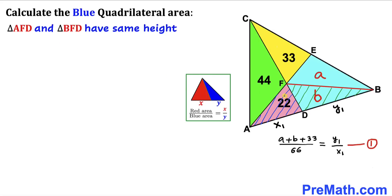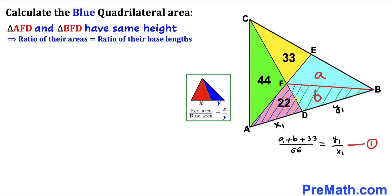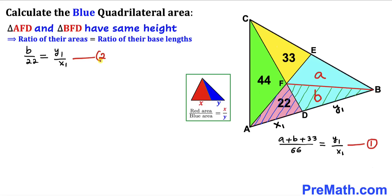Let's focus on triangles AFD and BFD. Once again, the ratio of their areas equals the ratio of their base lengths. In our case: B / 22 = y1 / x1. Let's call this Equation 2.